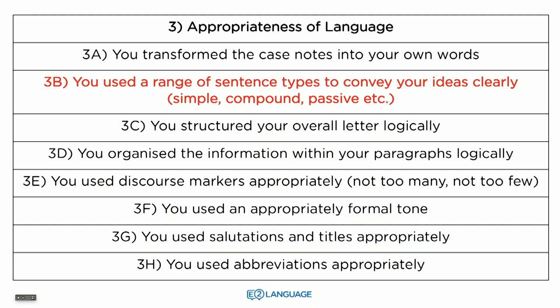Criterion 3B: you need to use a range of sentence types to convey your ideas clearly. You want to use some simple sentences, some compound sentences, and you should also use passive sentences where appropriate. For example, 'The medication was administered yesterday' is a nice passive sentence. We use it because in the active sentence — 'the nurse administered the medication yesterday' — the nurse is irrelevant. So if you just write simple sentences, add some compound and passive. If you just write really long complex sentences, add some short, simple sentences as well.